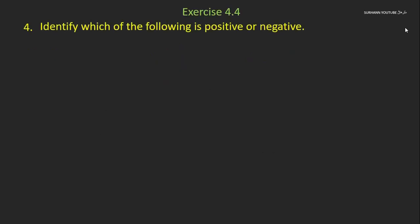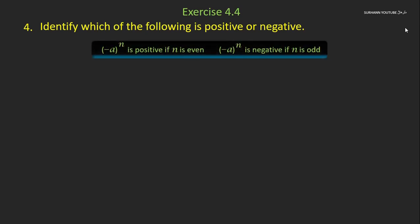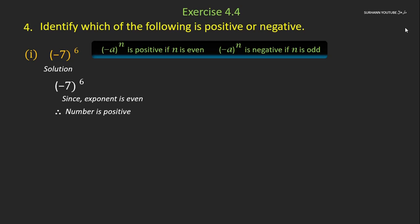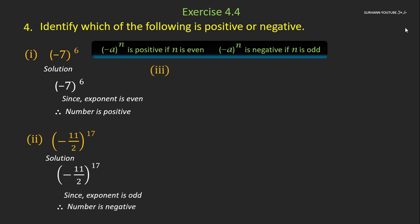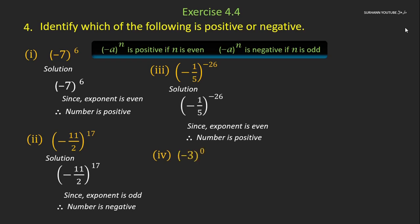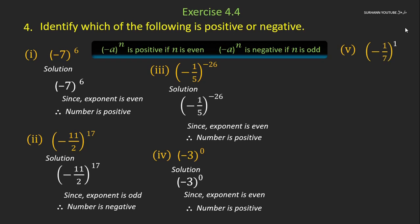Exercise 4.4, question number 4: identify which of the following is positive or negative. To solve this, keep this rule in mind. Problem number 1: minus 7 to the power 6 — the exponent 6 is an even number, so the answer is positive. Similarly, solve all other problems by yourself. Just identify whether the exponent value is even or odd, then decide whether the result is positive or negative.